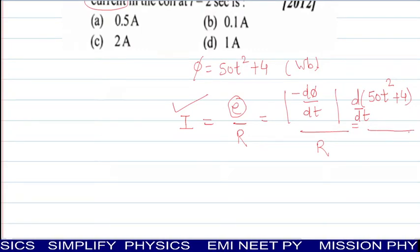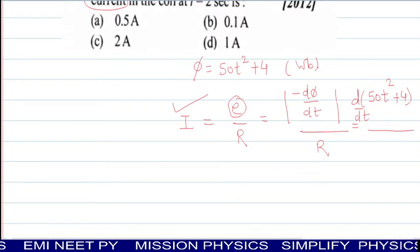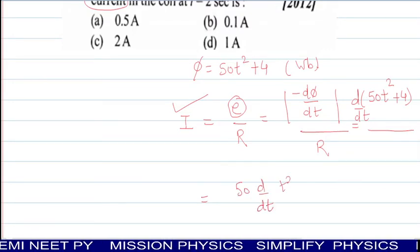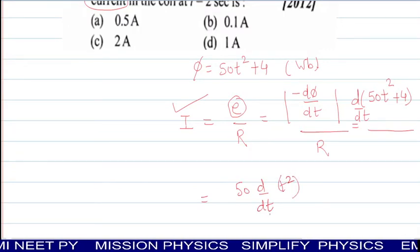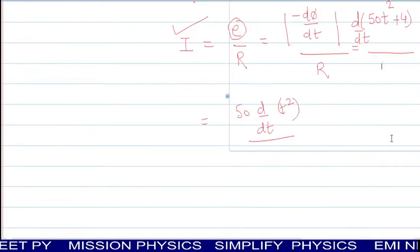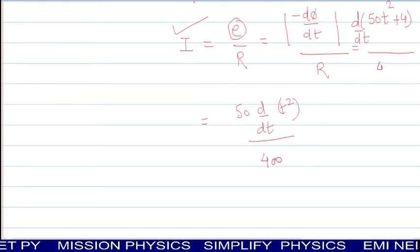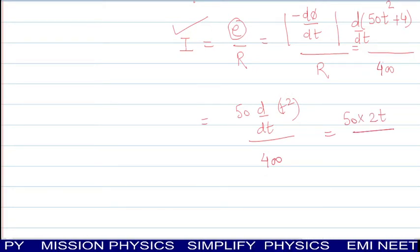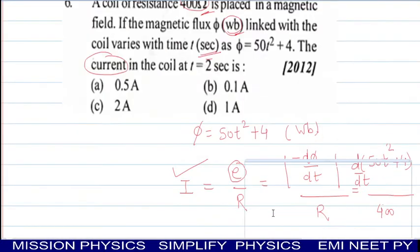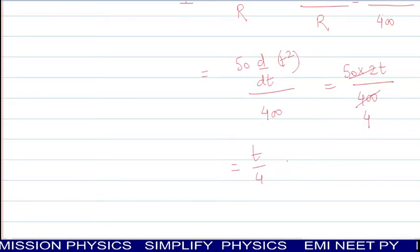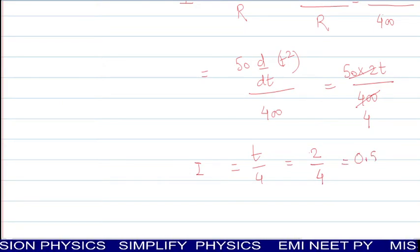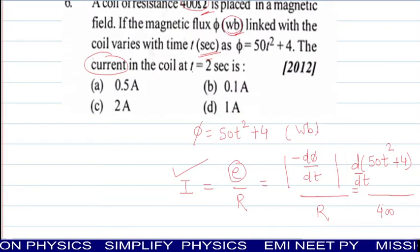Putting value of phi as derivative type problem, you have to differentiate because flux is not constant. Value put, divided by value of resistance. Now we differentiate. This equals 50 d by dt of T square, and d by dt of 4 will be 0, divided by value of R. Check R in question - it is 400. This is divided by 400. Now it is 50 into 2T divided by 400. This is T by 4. At what time we have to find? At 2 second. This equals 2 by 4. So answer for current equals 0.5 ampere. Check for option - this is option number A.